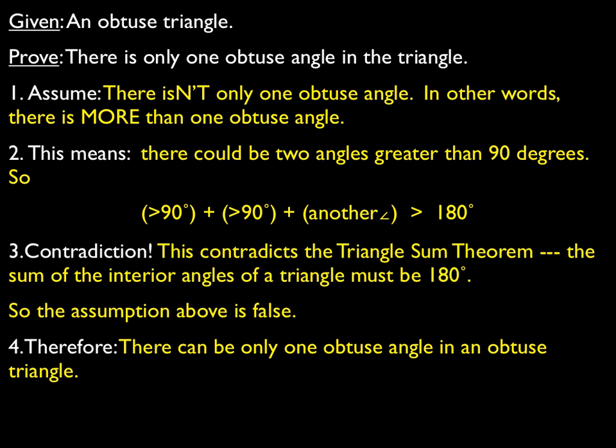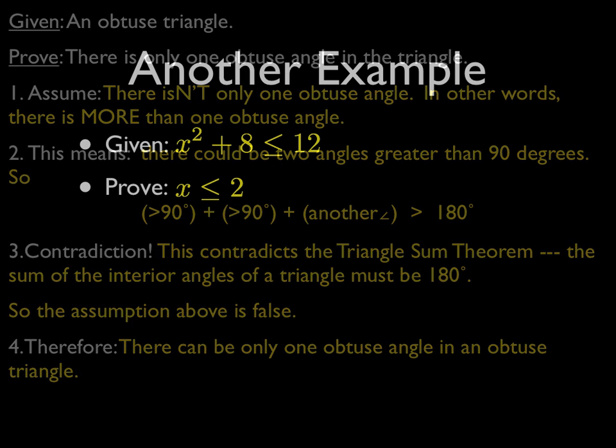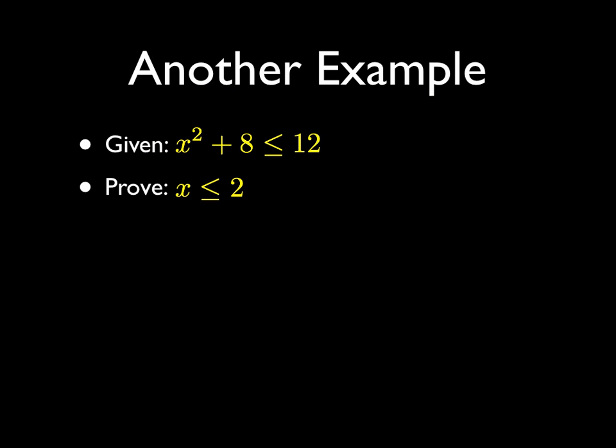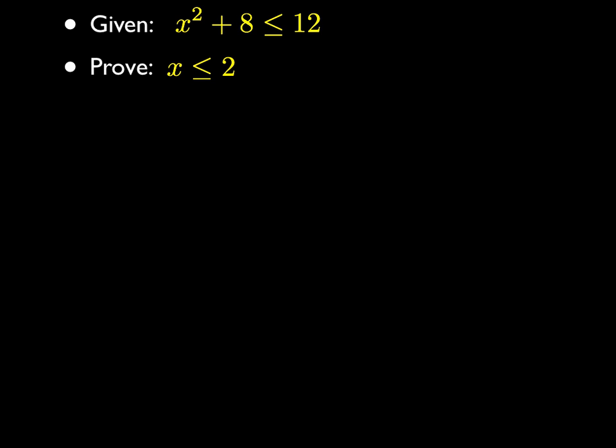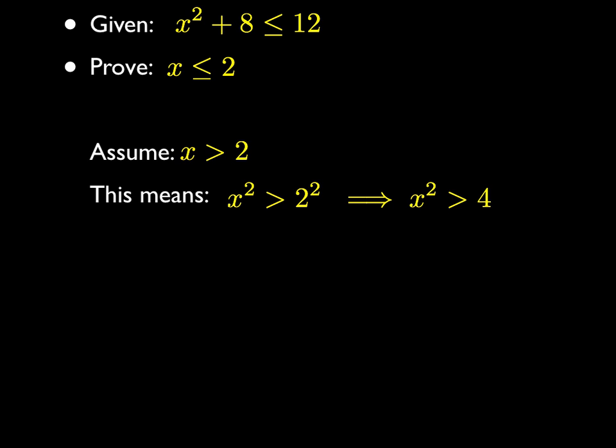Given that x squared plus 8 is less than or equal to 12, prove that x must be less than or equal to 2. If we assume the opposite — that x is greater than 2 — then that means x squared has to be greater than 2 squared. We're just squaring both sides of the inequality, so x squared is greater than 4.